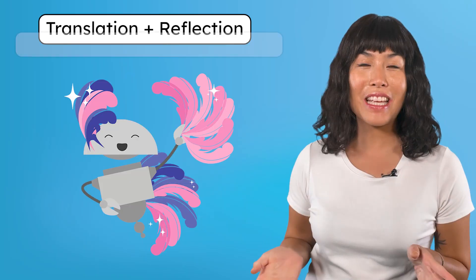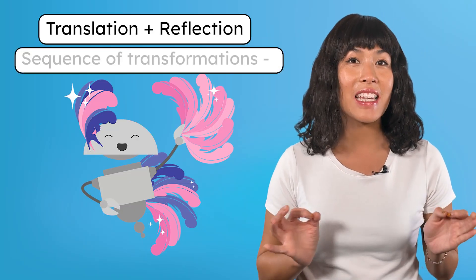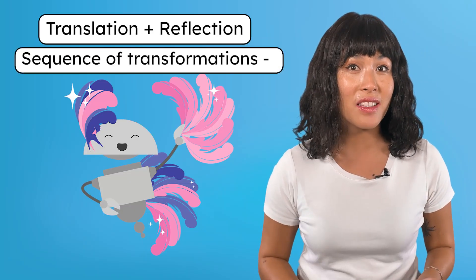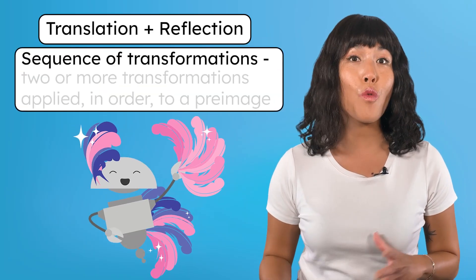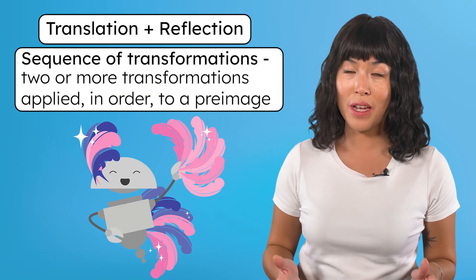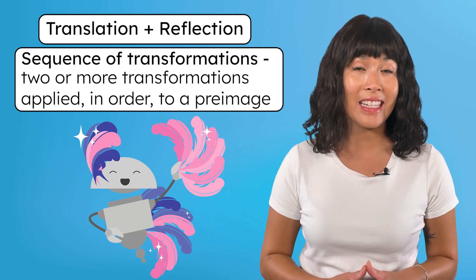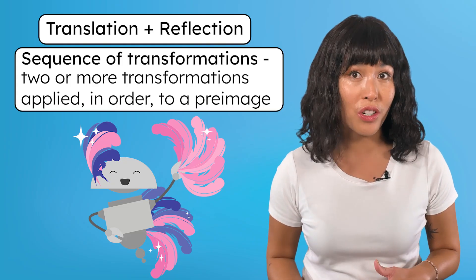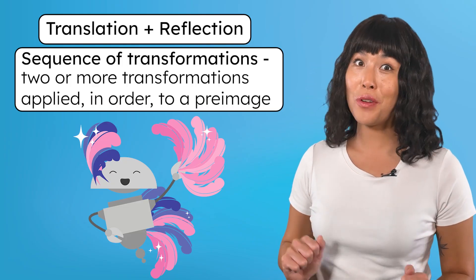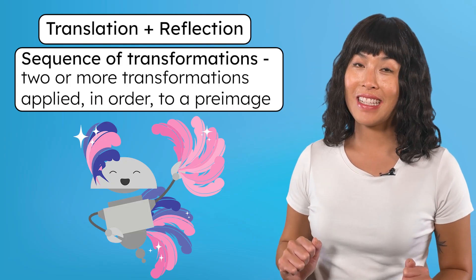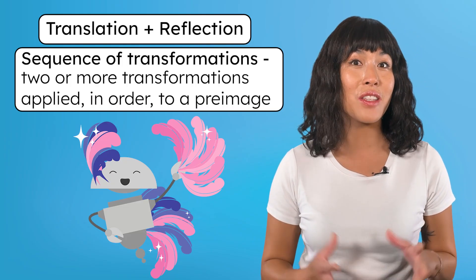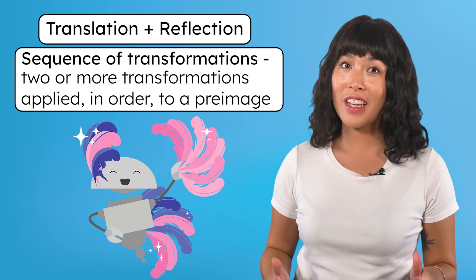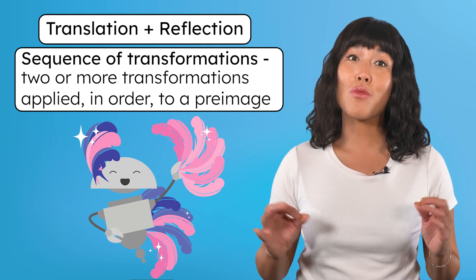This is an example of a sequence of transformations, which is two or more transformations applied in order to a pre-image. Today, you'll see different combinations of translations, reflections, and rotations.